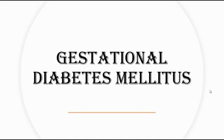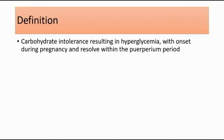Today's topic is on gestational diabetes mellitus, also known as GDM in pregnancy. The definition is carbohydrate intolerance resulting in hyperglycemia with onset during pregnancy and resolved within 6 weeks postpartum period.